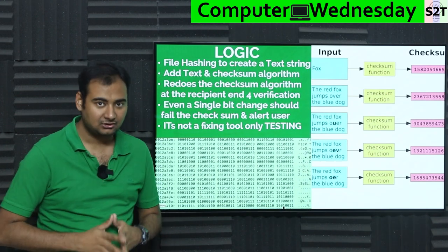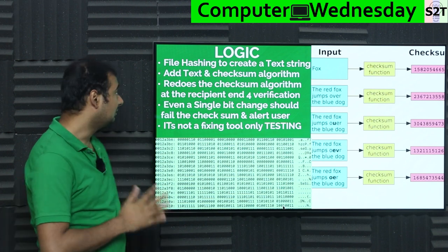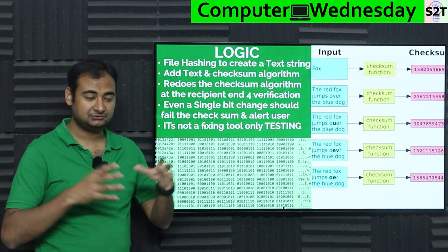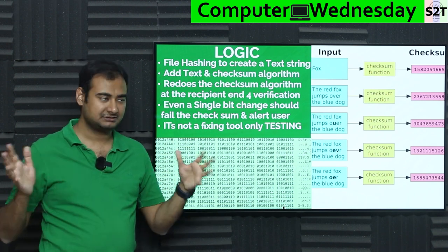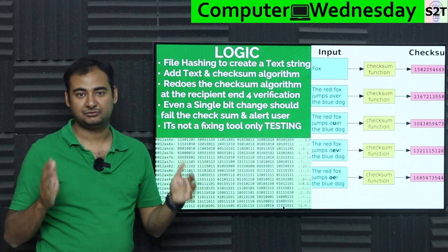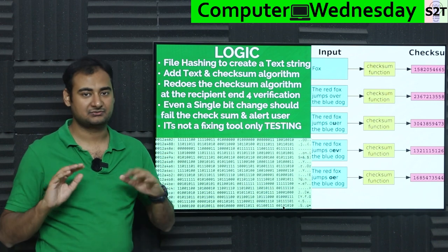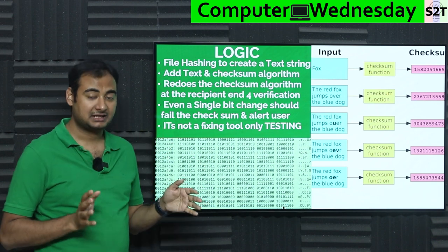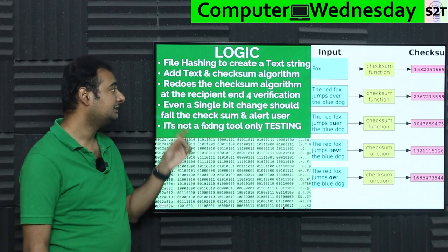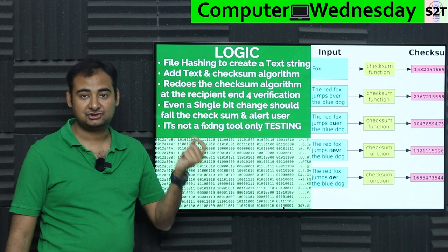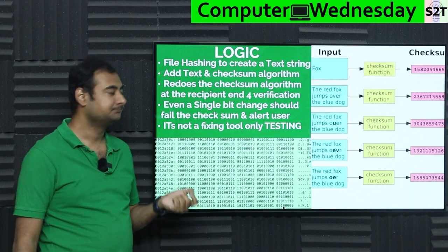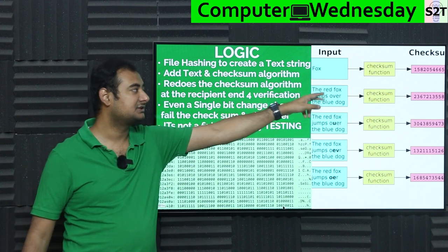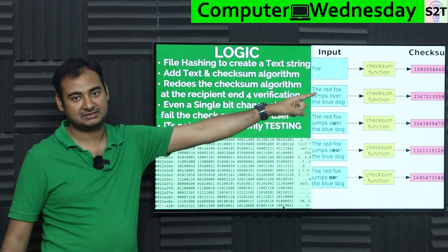So what's the logic behind it? The logic is very simple: file hashing. You take your file, whatever the size — a few gigabytes, a few terabytes — and you extract a hash from it using a checksum algorithm. You send the file through a checksum algorithm and you get the checksum data.